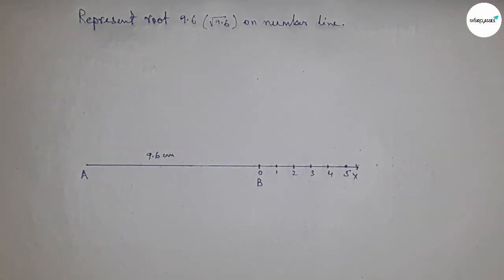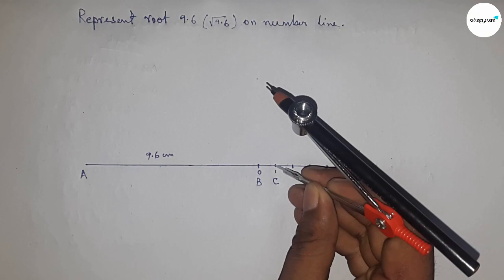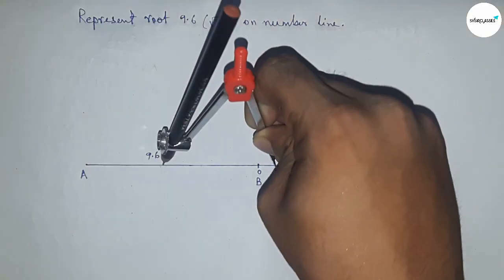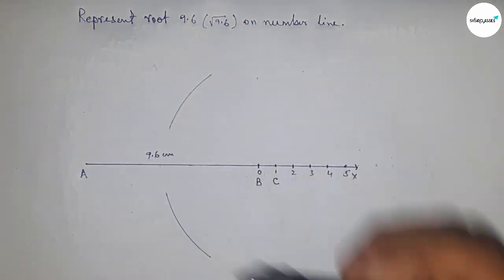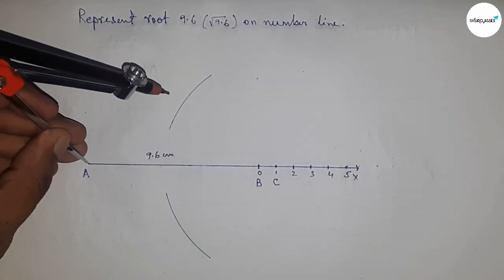Next, bisect the line AC. Take greater than half of AC and draw arcs this way. With the same length, put the compass here and cut the arc by this way.